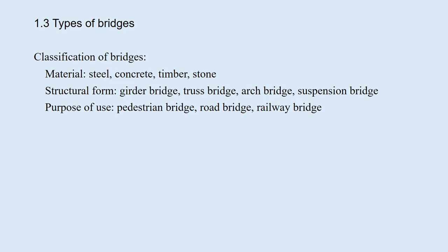1.3 Types of Bridges. There are many bridges in the world. They can be classified in three ways: by materials, such as steel, concrete, timber, or stone; by structural forms, such as girder bridge, truss bridge, arch bridge, or suspension bridge; and by purpose of use, such as pedestrian bridge, road bridge, or railway bridge.